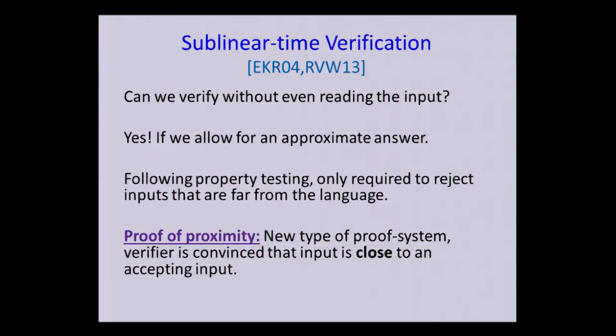And I want to stress that this is really a new type of proof system, and what the verifier is convinced is not that X is in the language, but rather that X is close to an input that is in the language. So it's a proof of proximity to the language. And in fact, you can think of this as an interactive proof variant of property testing. So we're augmenting the property testing framework by adding an online interaction with a powerful but untrusted prover.